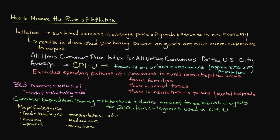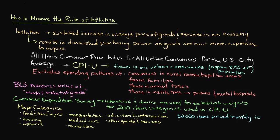Within each of these groups, the Bureau of Labor Statistics chooses specific items within selected business establishments frequented by consumers. Data collectors for the Bureau then proceed to call thousands of different establishments in order to obtain prices for those goods previously identified. Altogether, a total of 80,000 items are priced per month in order to create the CPIU.